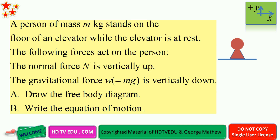A person of mass m kg stands on the floor of an elevator while the elevator is at rest. The following forces act on the person: the normal force n is vertically up, and the gravitational force w equals mass times acceleration due to gravity, acting vertically down. Draw the free body diagram and write the equation of motion.